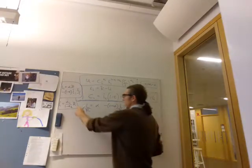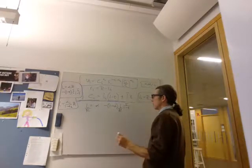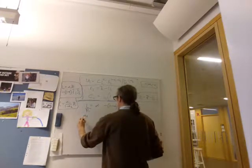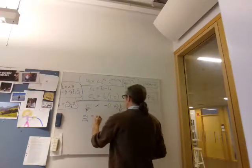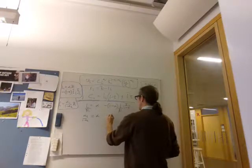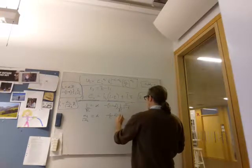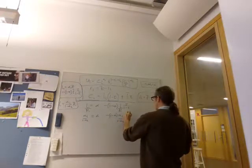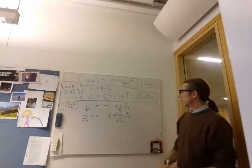So now we have L over R is alpha minus 1 minus alpha L over R tau over 1 minus tau. So we have alpha 1 over 1 minus alpha 2 equals alpha minus 1 minus alpha times alpha 1 over 1 minus alpha 2 tau over 1 minus tau.